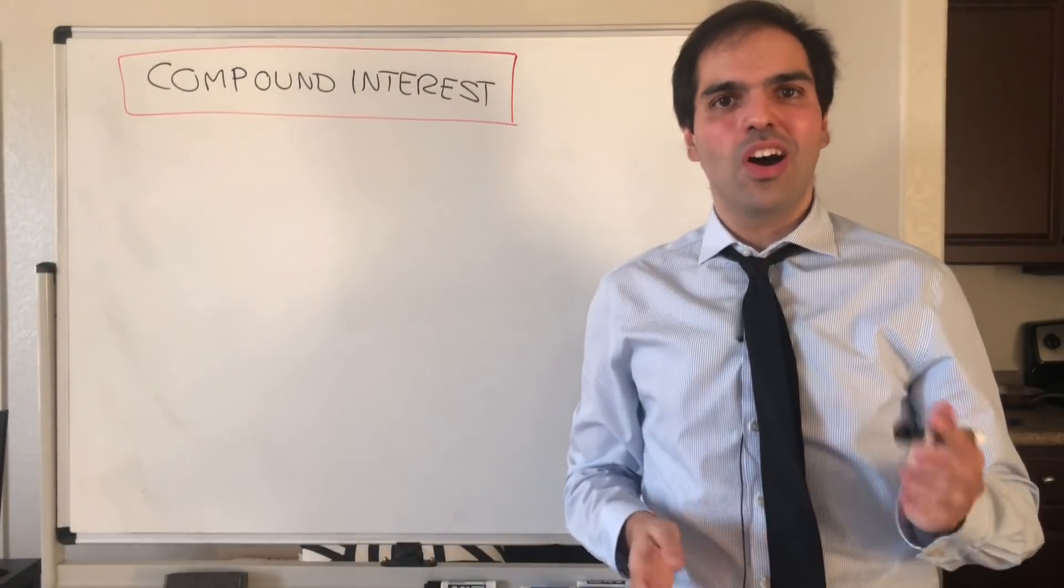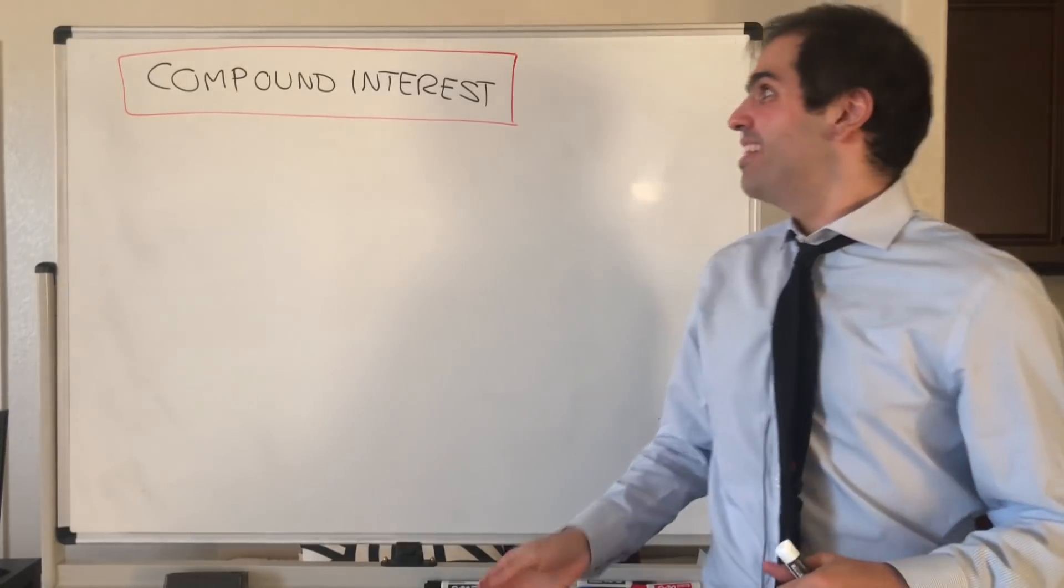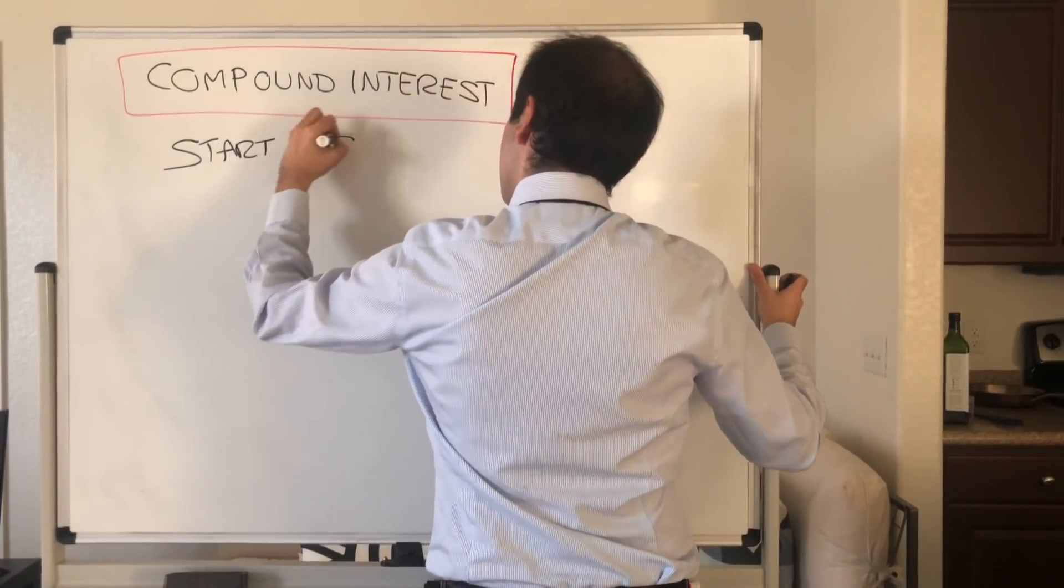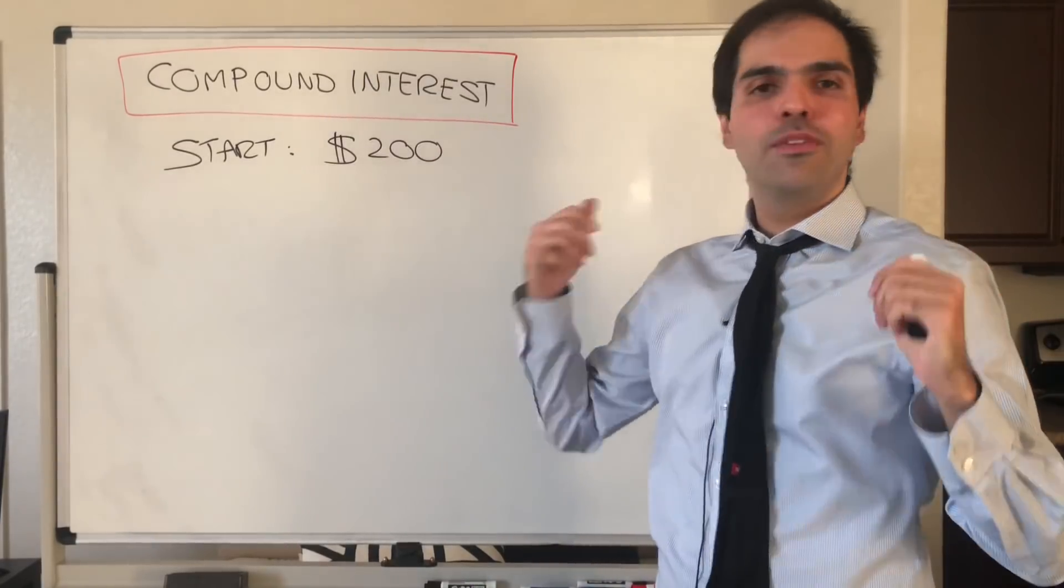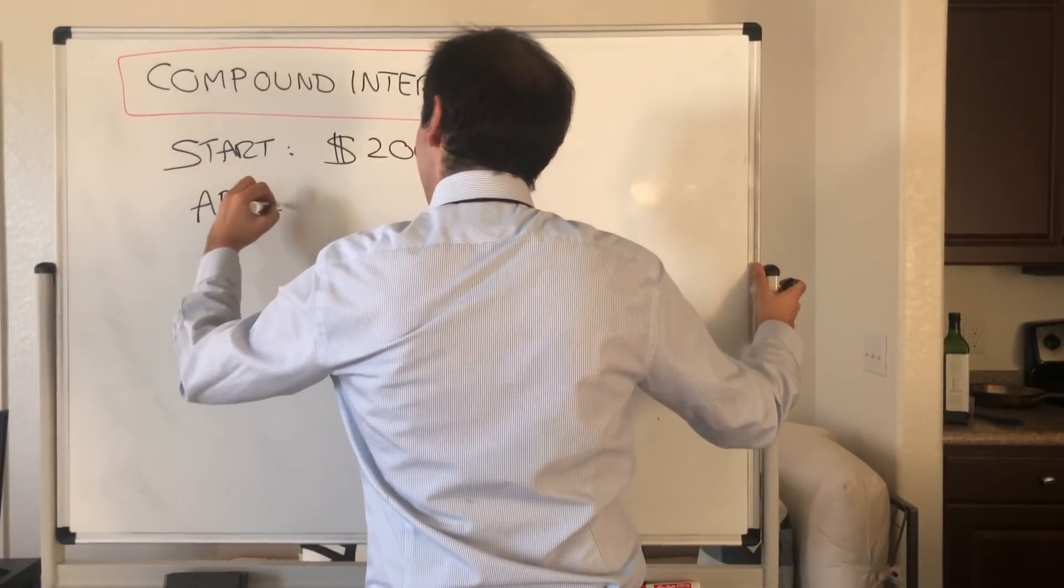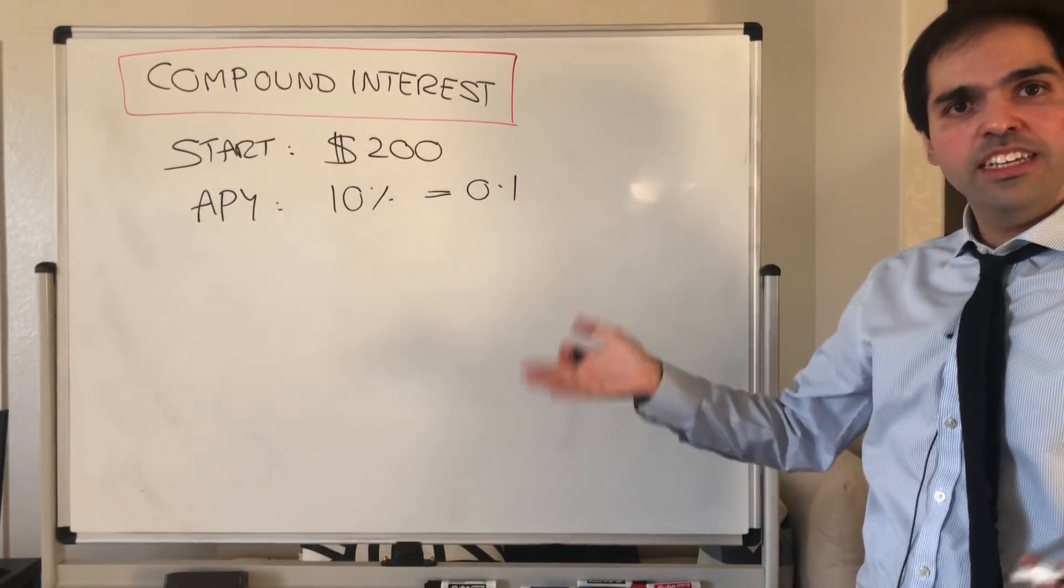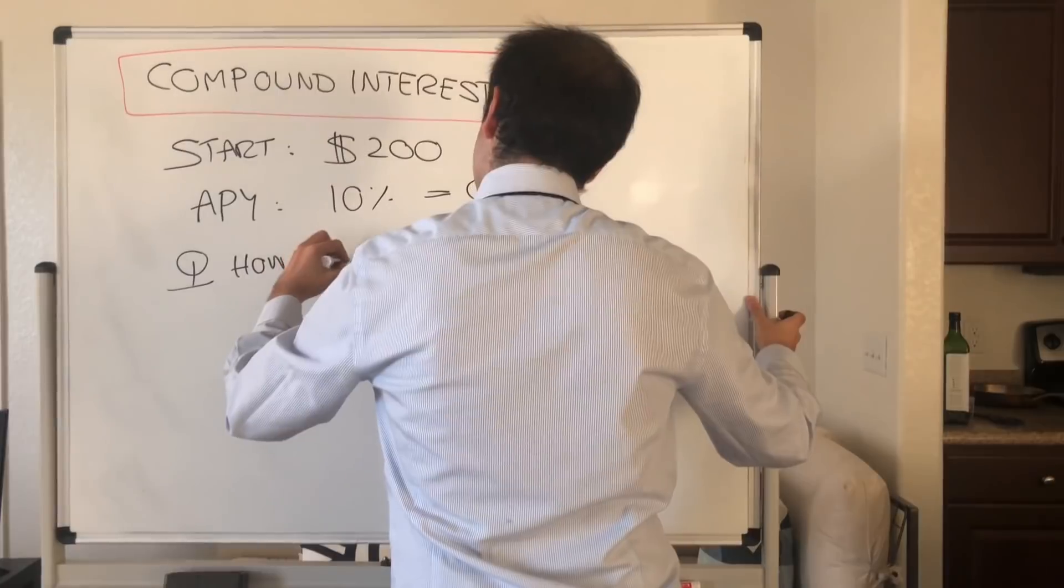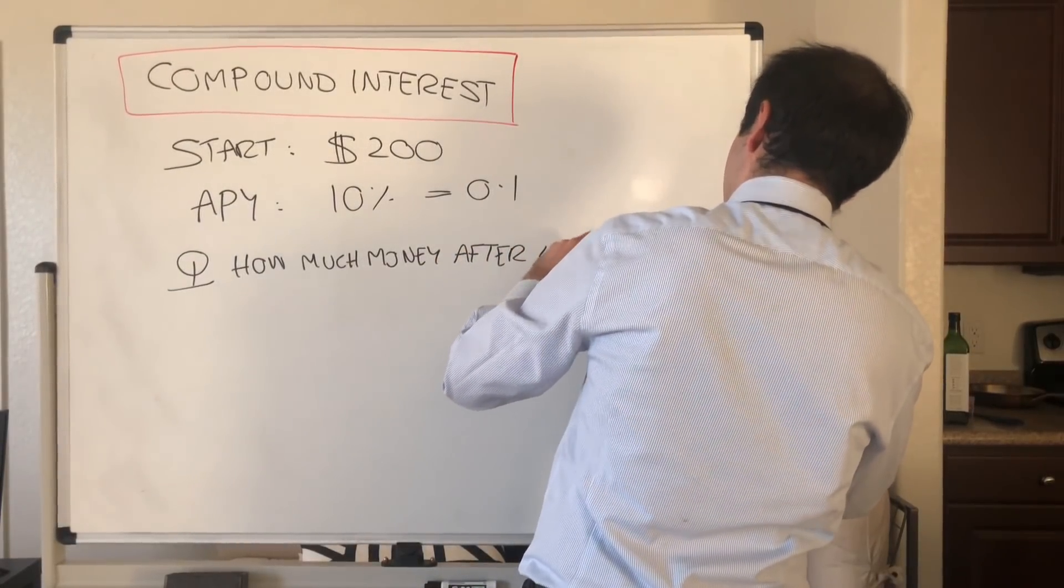All right, thanks for watching. Today I would like to talk about compound interest because it's a fun way of learning math and you get rich quick. All right, so suppose you have the following scenario. You start with $200, and suppose I'm Bank of Pi America, and I tell you that if you put the money in our savings account, you get 10% interest per year. So APY 10%, which is the same thing as 0.1. And the question is, how much money will you have after four years?